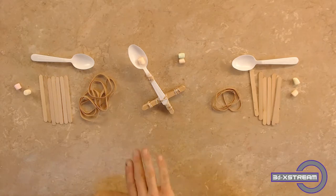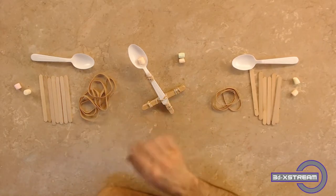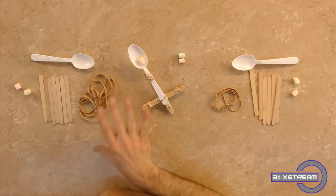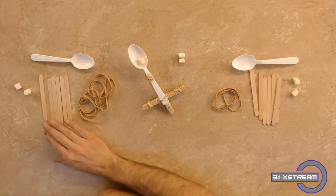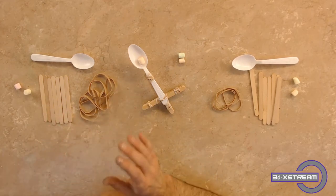For this project you only need a few things: a spoon, some rubber bands (about five or six), seven popsicle sticks, and some marshmallows or an object to throw that is not hard.